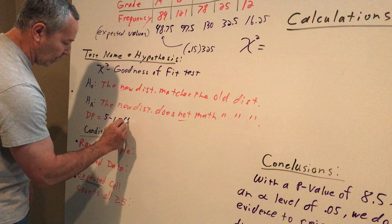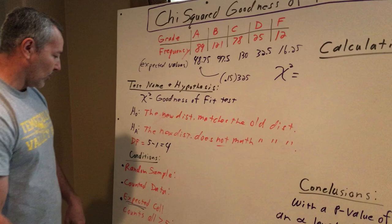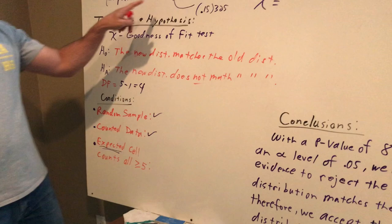Conditions are really nice. Random sample. We don't really have this, but we have no reason to assume that this is not a random sample of the grades he has or not represented of the population. Counted data. We have counts. That's what these are right here.